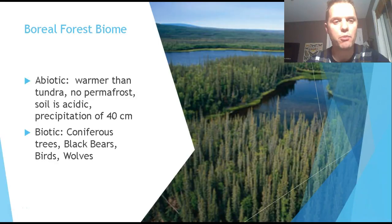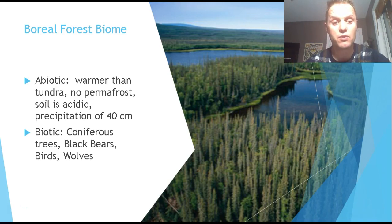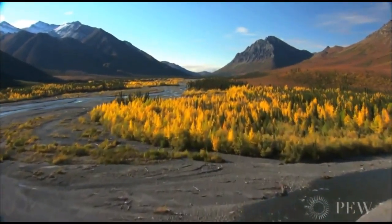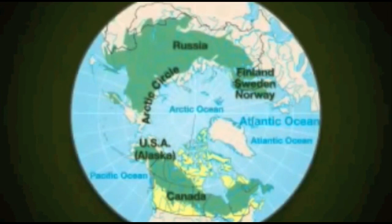The biggest biome in Canada is the boreal forest biome. It's warmer than the tundra and as a result there's no permafrost, so coniferous trees with needles grow there — they can survive colder weather and a shorter growing season. The needles dropping onto the ground make the soil acidic, and precipitation is higher than in the tundra. Animals include black bears, birds, and wolves. The boreal forest is circumpolar, occurring in Canada, Alaska, Russia, Scandinavia, and into Mongolia.